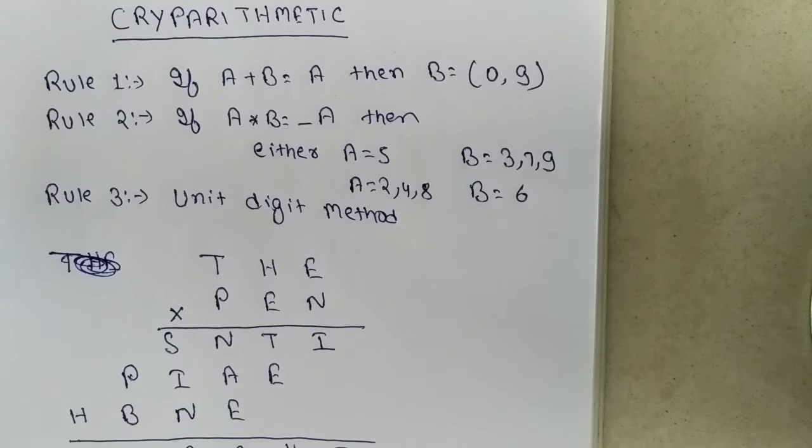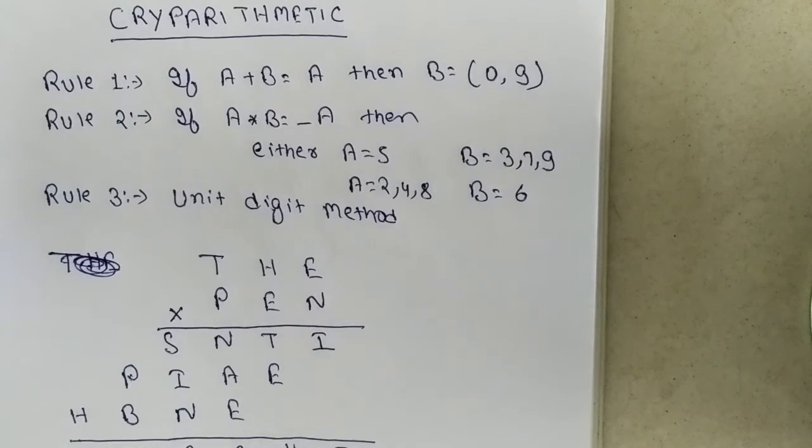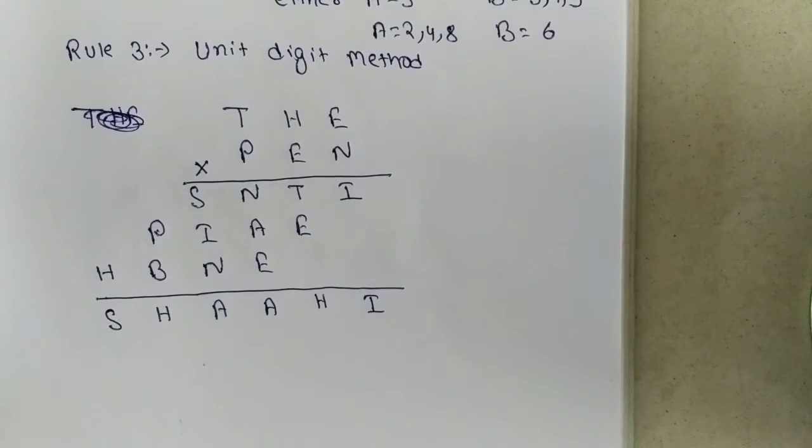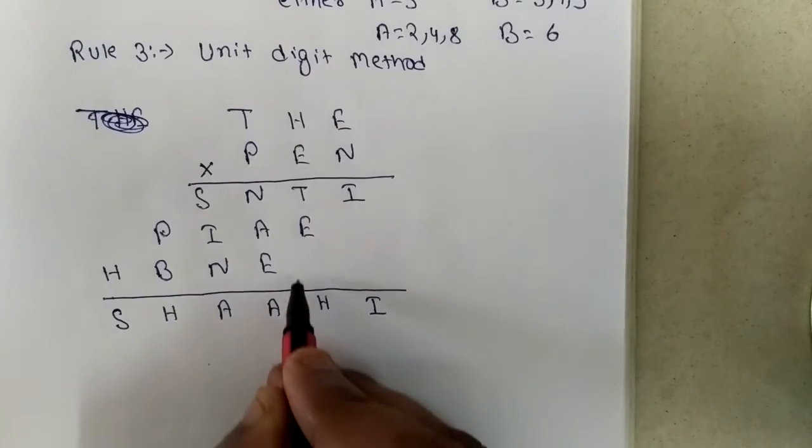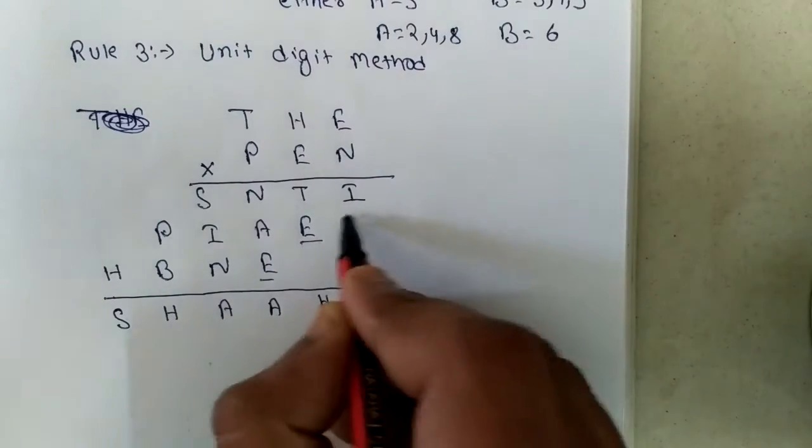Now solving an example. Here you are seeing an example: THE times PEN equals SNTI, PIAE, HBNE. Whenever we are getting this question, we have to see first on the unit digit of every multiplication.